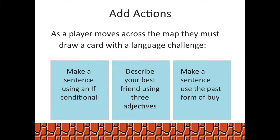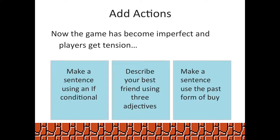I thought about making little cards. As the players move across the United States map, they can draw a card with a language challenge. For example, they draw a card and it says 'make a sentence using an if conditional,' or 'make a sentence using the past form of I.' This makes the student unsure of what they're going to get — it adds that pleasant tension. From a teacher's point of view, I can simply make various sets of cards: a low-level card set, an intermediate card set, an advanced card set, and just swap those out. Instead of remaking the board every time, I can swap out the cards and have a game appropriate for my students' levels and abilities. So I've moved from perfect to imperfect and added a tension element.